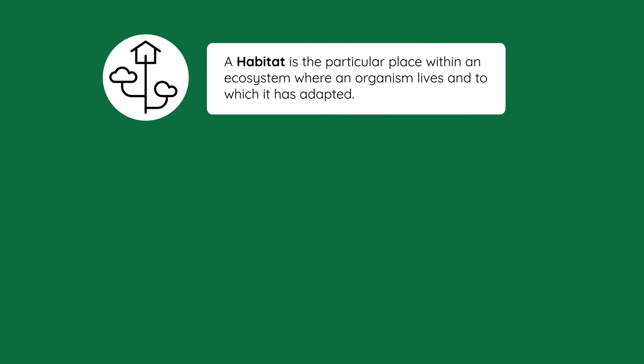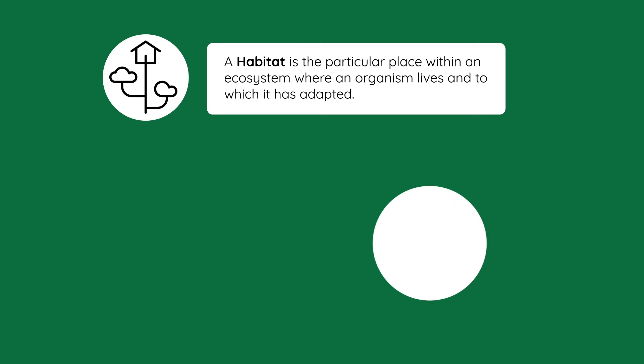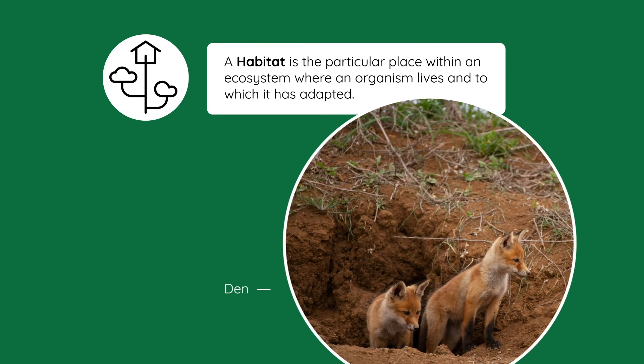It's useful for ecologists to break ecosystems up into smaller, more defined areas. A habitat is the particular place within an ecosystem where an organism lives and to which it has adapted. An example would be that a fox lives in a particular place called a den, which is a hole in the ground, often located in a forest ecosystem.